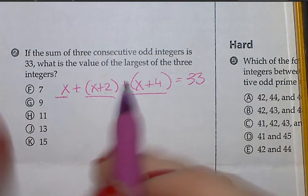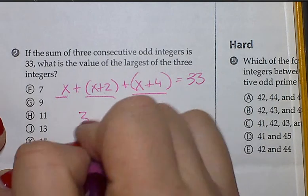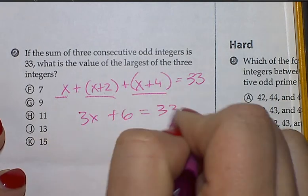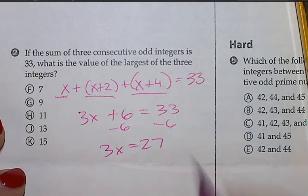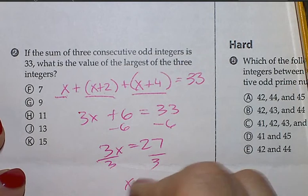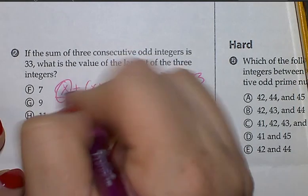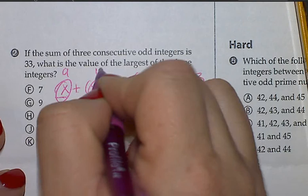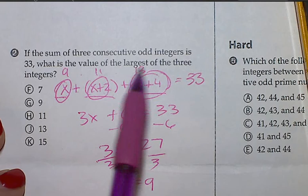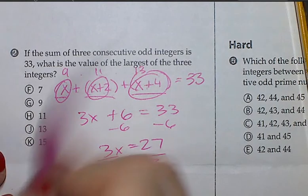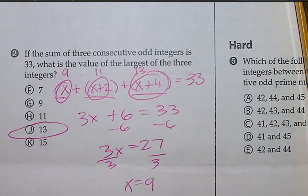Okay, basic math now to solve. x, x, x is 3x. 2 and 4 is 6, equals 33. Subtract 6 from both sides. Divide by 3 and x equals 9. So this is 9. This is 11. And this is 13. What is the largest of the three integers? It is 13. How many on your own without guessing got number 2 right? Probably not too many. How many were able to understand this explanation? Anybody? Okay.